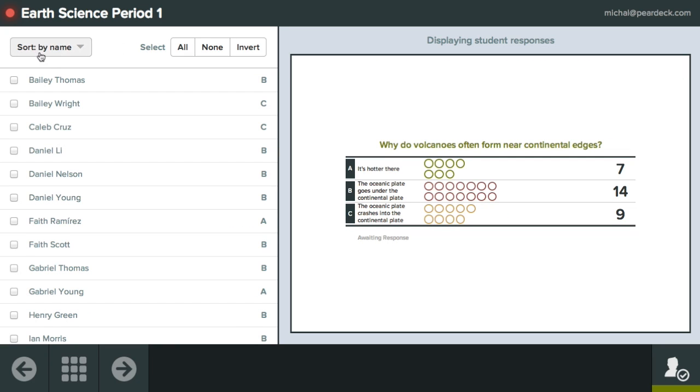On multiple choice questions and free response number questions, if you sort the student list by response, you can quickly see students grouped by similar answer.